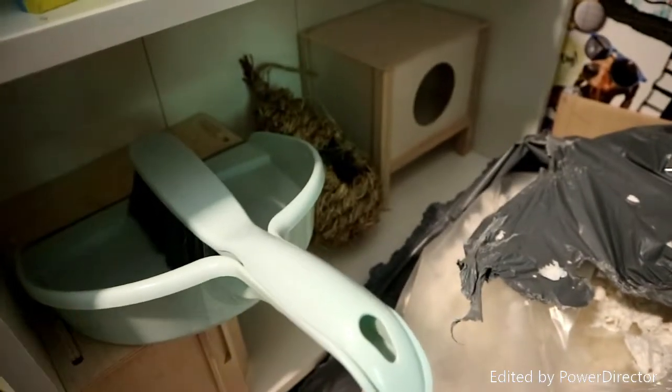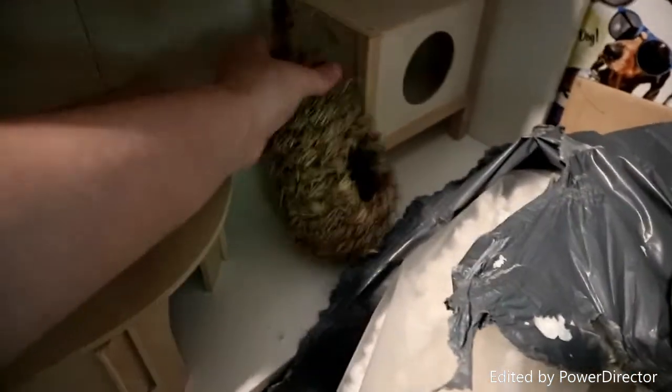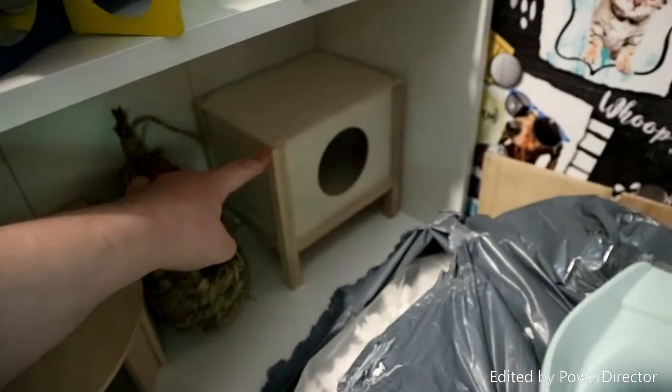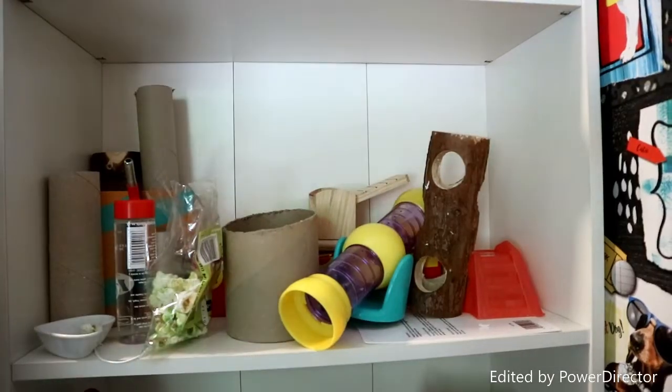So on this shelf there's just this dustpan and brush which everyone needs. And then there's this hideout. This one just came with the cage and then there's this seagrass hideout which you can attach onto the bars. It is for birds but it's really good. Mimi loves this type of stuff.